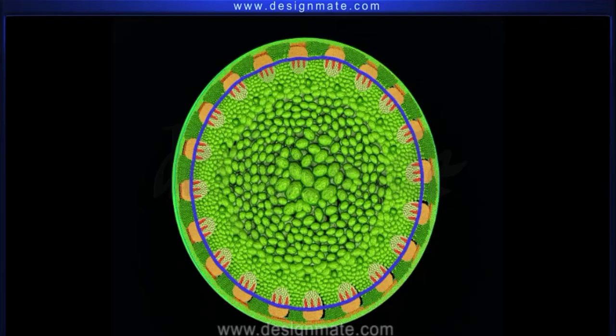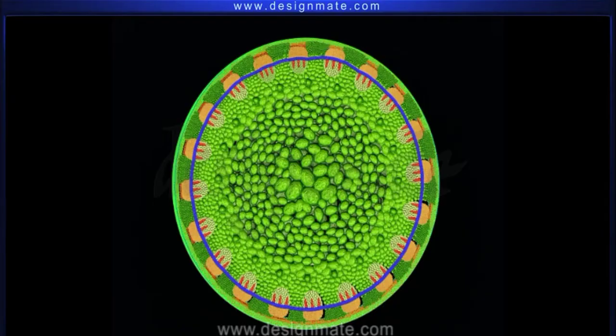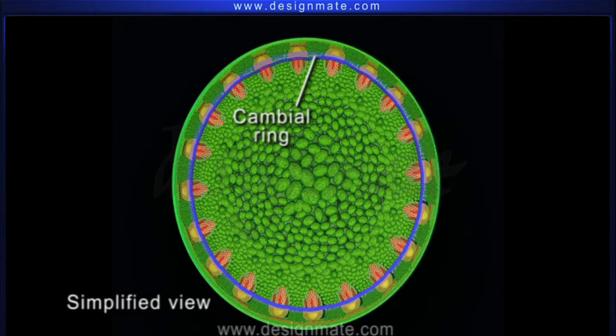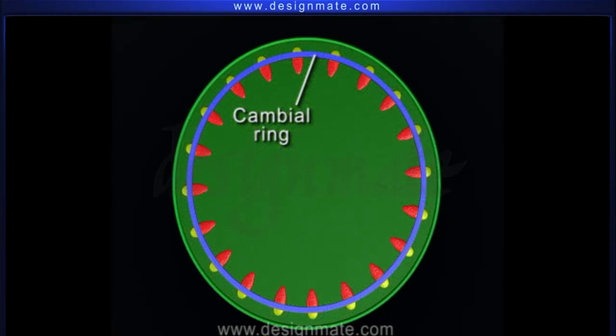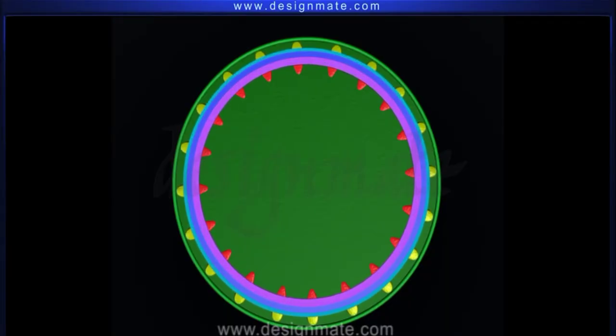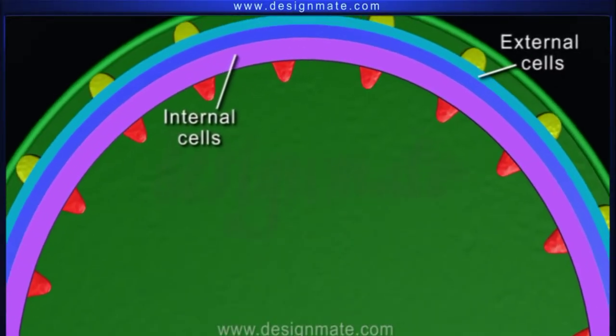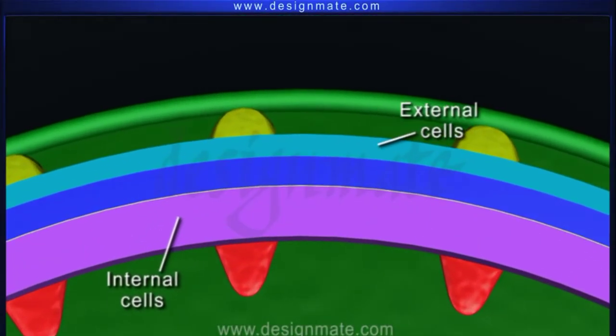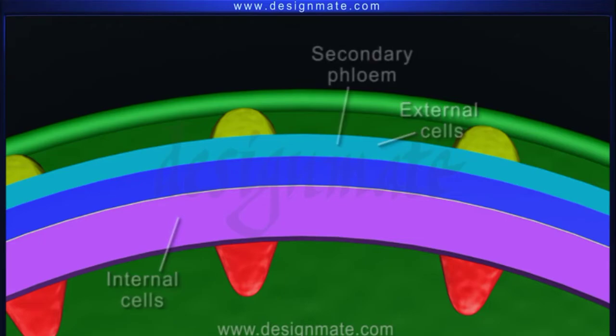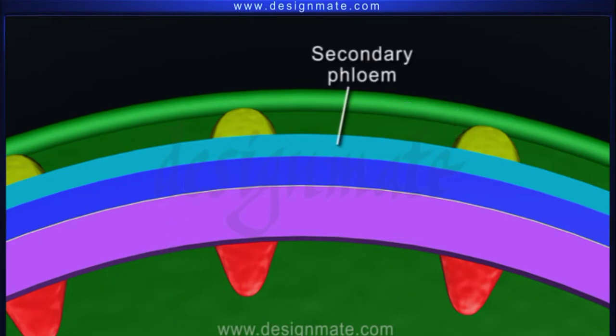Now let us understand the activity of this cambial ring. A cross-section of a dicot plant shows the cambial ring. For an easy and quick understanding, let us look at the simplified view of this stem. With maturity, the active cambial ring gives off new cells both externally and internally. The external cells get modified and differentiate to constitute the secondary phloem, while the new cells on the inner side of the cambium are modified into secondary xylem.